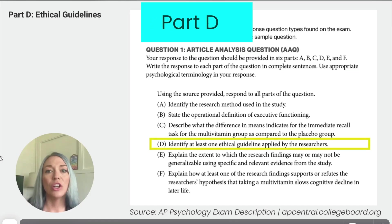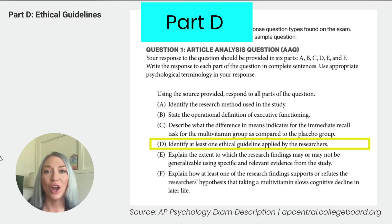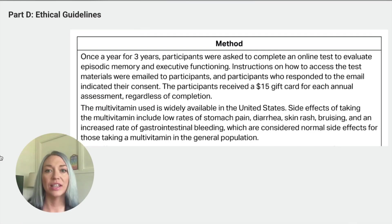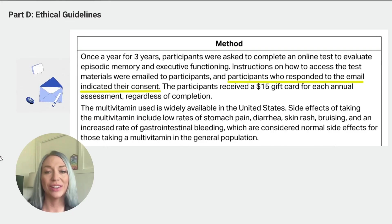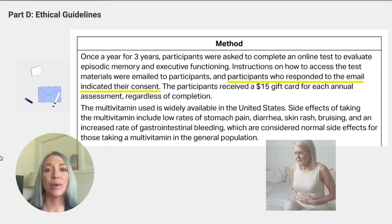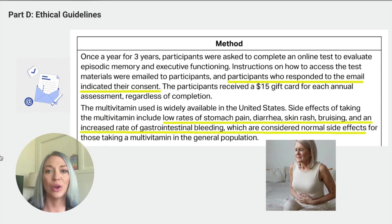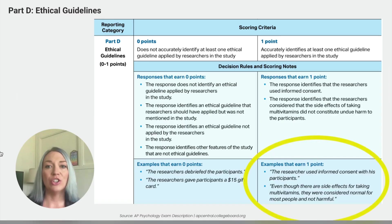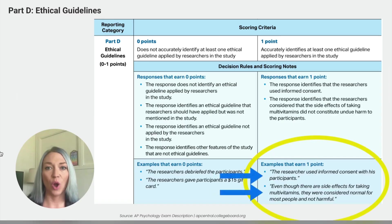For Part D, we need to identify at least one ethical guideline applied in the study. In the methods section, we read that participants indicated their consent by responding to an email. It also mentions that the researchers considered the side effects to be normal. You could mention either informed consent or the consideration of undue harm to earn one point.